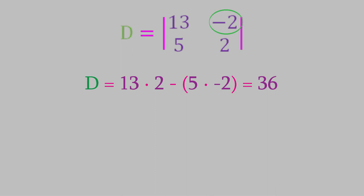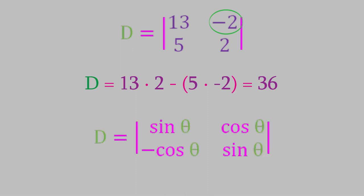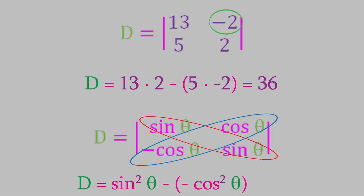It's also possible for the elements in a determinant to be functions instead of just numbers. For example, we solve this determinant by multiplying the diagonal elements, which gives us sine squared of theta, and then subtracting the product of the other two elements. That gives us sine squared theta plus cosine squared theta. If you've taken a course in trigonometry, you'll know that this is equal to 1.